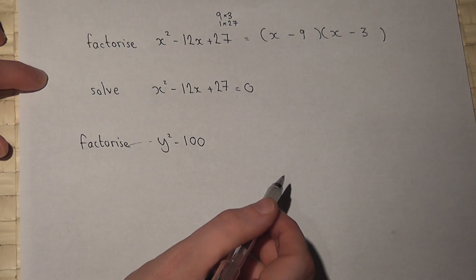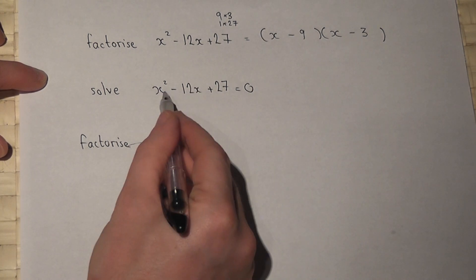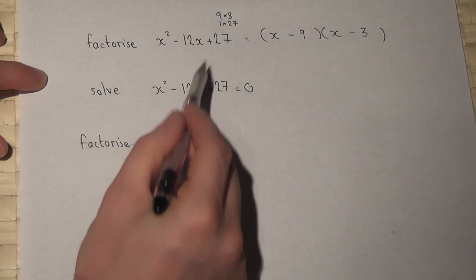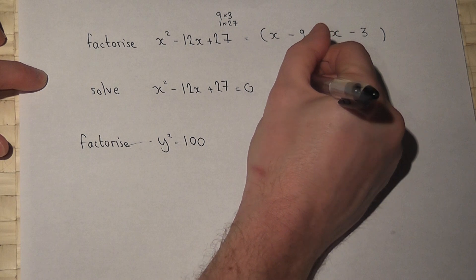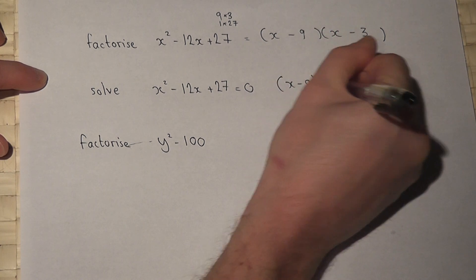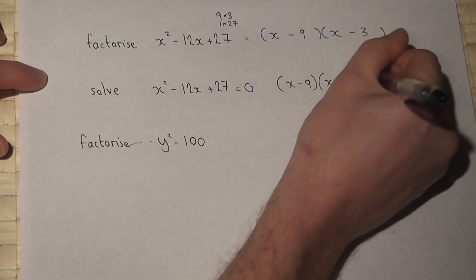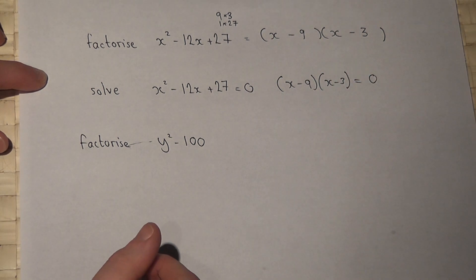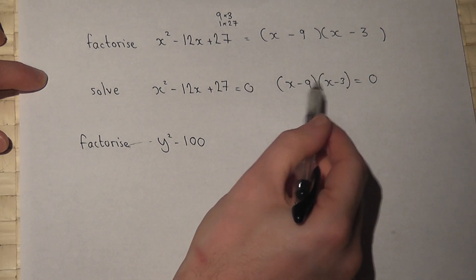If we're asked to solve this equation, observe it's the same expression, so this is (x - 9)(x - 3) = 0. We must find two values of x which make these brackets equal to 0.